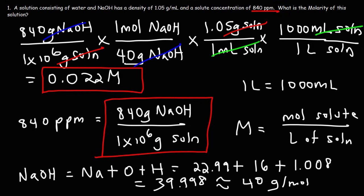Now what about working backwards? Let's try an example problem of how to go from molarity to parts per million. Problem two: a 0.004 molar potassium iodide solution has a density of 1.03 grams per milliliter. What is the concentration of this solution in PPM?